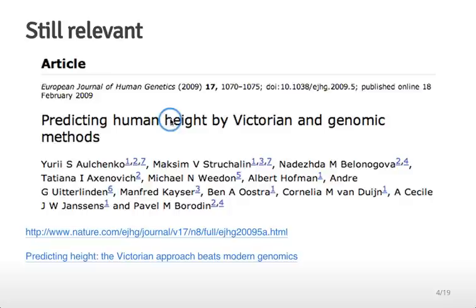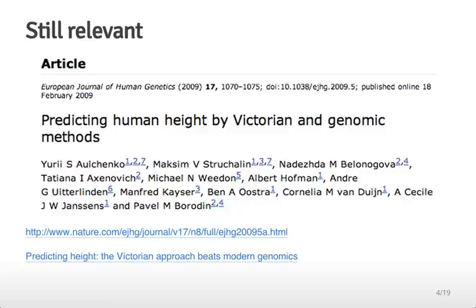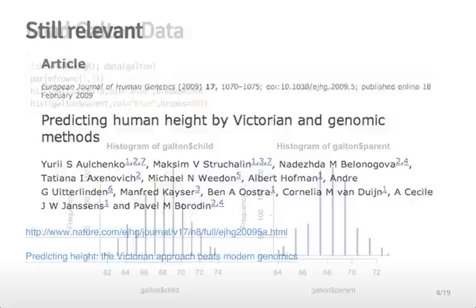This is still a relevant problem. In a clever paper, investigators predicted the height of children based on the mid-parent height — the Victorian approach Galton developed — and also used the best modern genetic measurements available for predicting height. It turns out it's still better to predict using the average of the parents' heights rather than using genetic information, even with all the modern tools we have.